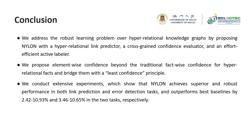In conclusion, we address the robust learning problem over hyper-relational graphs by proposing Naylan with a hyper-relational link predictor, a cross-sentence confidence evaluator, and an effort-efficient active labeler. We propose element-wise confidence beyond traditional fact-wise confidence for hyper-relational facts, and combine them with a least-confident principle. We conduct extensive experiments which show that our Naylan achieves superior and robust performance in both link prediction and error detection tasks, and outperforms the best baselines in both tasks respectively.